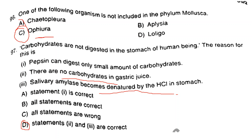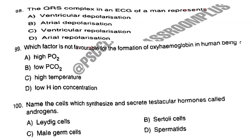Question number 98. The QRS complex in an ECG of a man represents. Answer is Option A: Ventricular depolarization. Question number 99. Which factor is not favorable for the formation of oxyhemoglobin in human beings? The answer is Option C: High temperature. Question number 100. Name the cells which synthesize and secrete testicular hormones called androgens. The answer is Option A: Leydig cells.